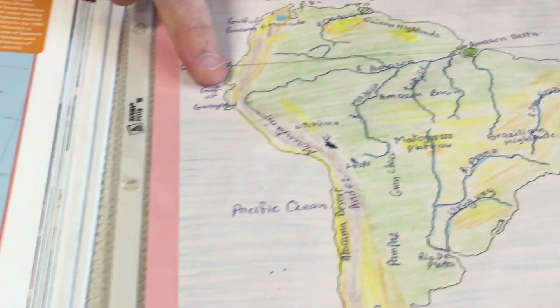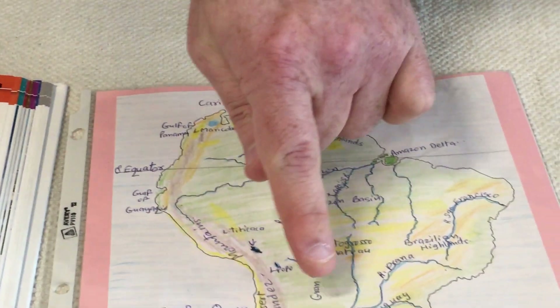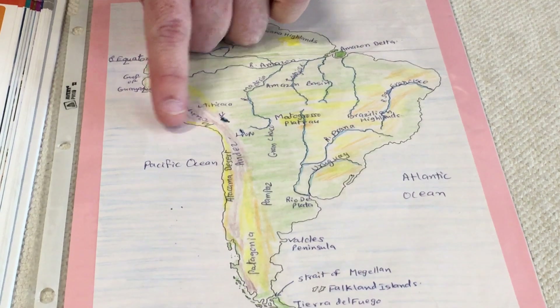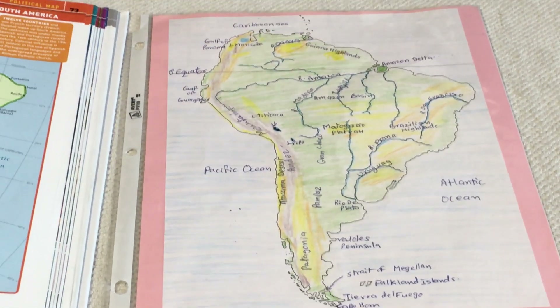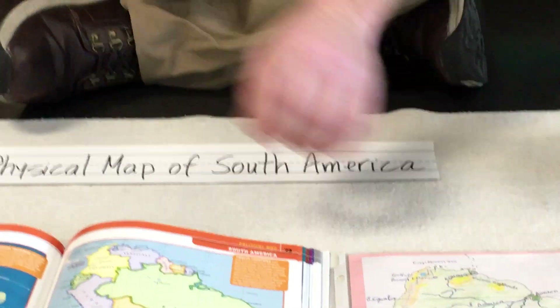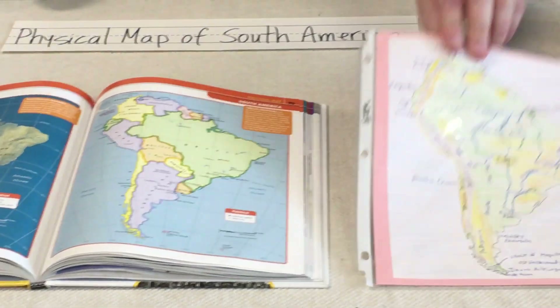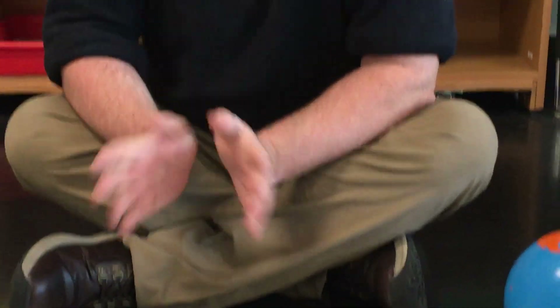South America also has bays and gulfs — you can see those little areas that go into the land. It has a peninsula at the bottom that sticks out into the ocean, and it's touched by both the Pacific Ocean and the Atlantic Ocean. There's a lot of things that only happen in South America. For your work, you'll be turning your blank map into a full map of South America, and you can do some research on what kinds of animals and species only exist in South America.